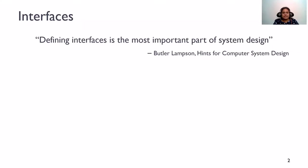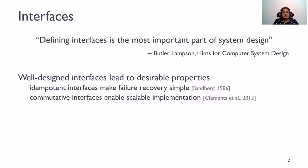As Lamson famously stated, defining interfaces is the most important part of system design. This is because well-designed interfaces often lead to desirable properties. For example, idempotent interfaces make failure handling simpler. Similarly, interfaces that are commutative enable scalable software implementation.